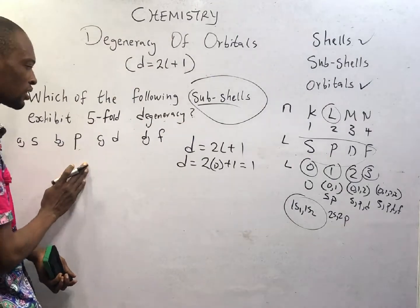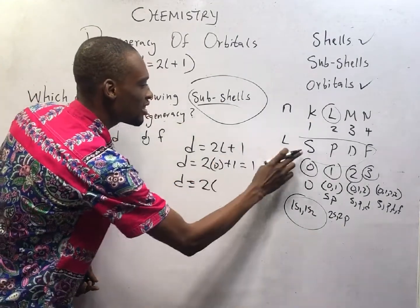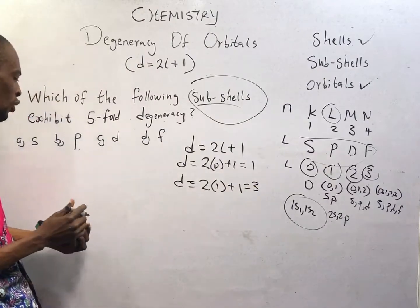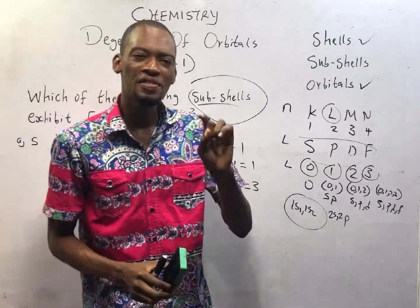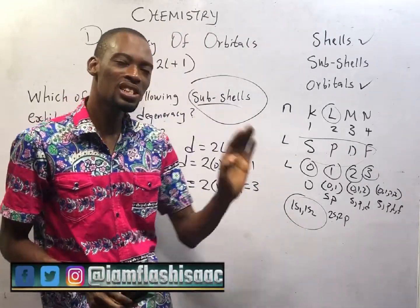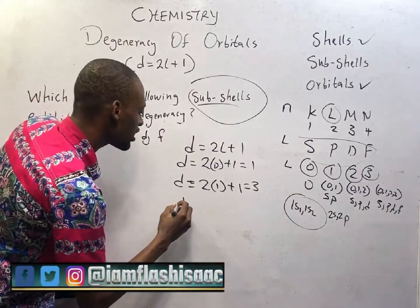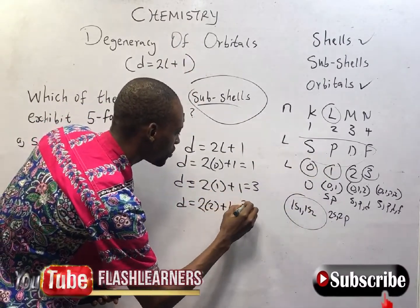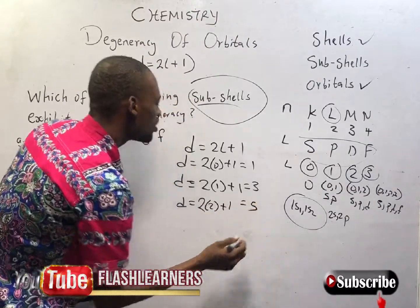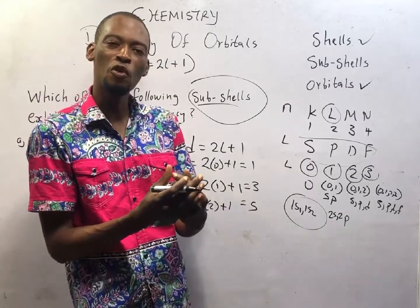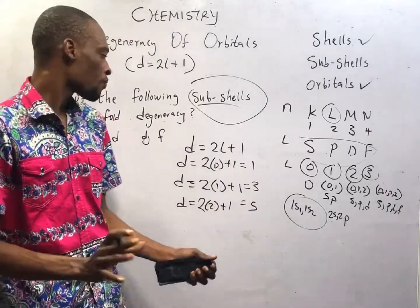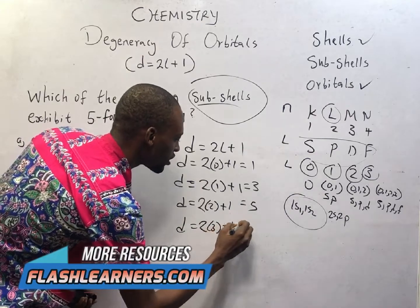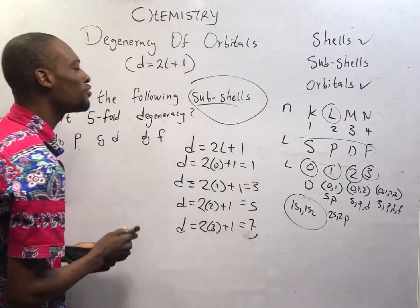For D subshell, L is 2, so D = 2(2) + 1 = 5. The D subshell exhibits 5-fold degeneracy, meaning it has 5 D orbitals. Finally, for F subshell, L is 3, so D = 2(3) + 1 = 7 — that gives 7-fold degeneracy.